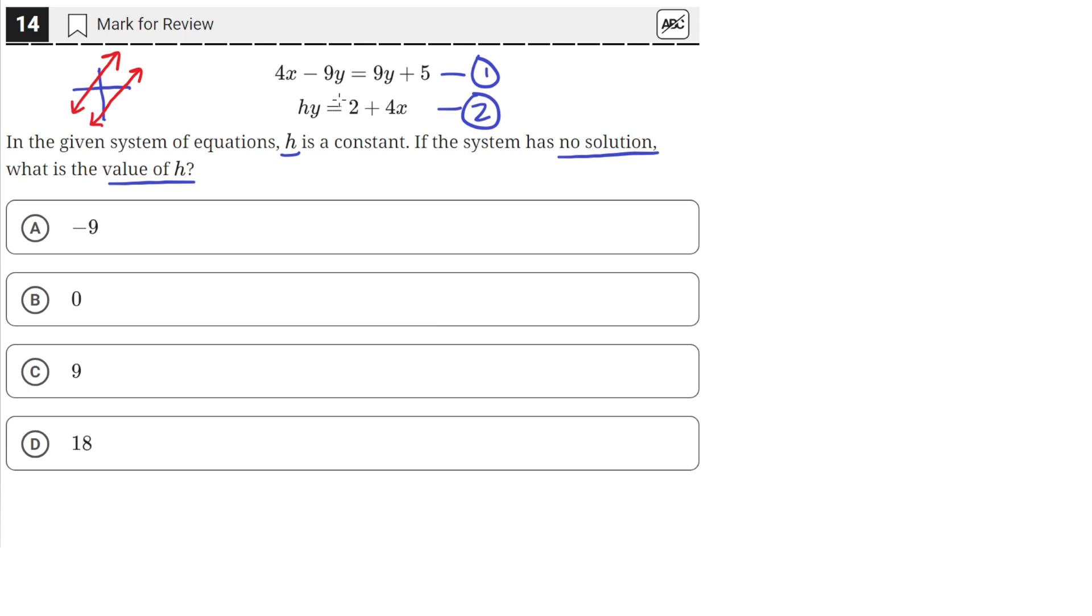Looking at the first and second equation, we can see that we can make the left-hand side look similar to the left-hand side of this equation by moving this 4x to the other side. So let's do that.